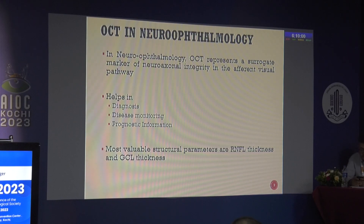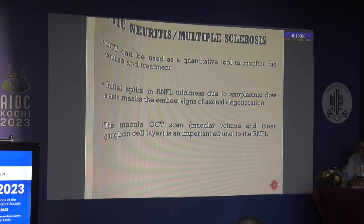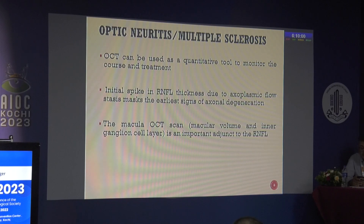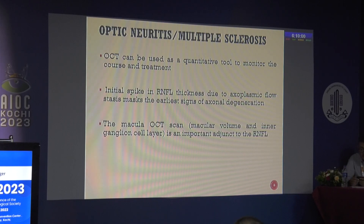The most valuable structural parameters are RNFL thickness and GCL thickness. For optic neuritis, which we mostly see in neuro-ophthalmological conditions, OCT can be used as a quantitative tool to monitor the course and treatment. An initial spike in RNFL thickness is due to axoplasmic flow stasis, which can mask the earlier signs of axonal degeneration — initially we see increased RNFL thickness and cannot determine whether axonal degeneration is already happening or if it is just edema.